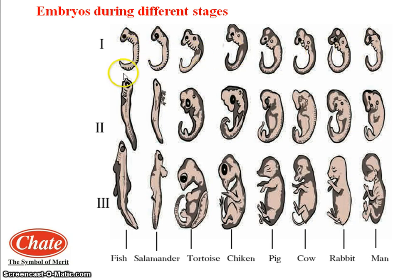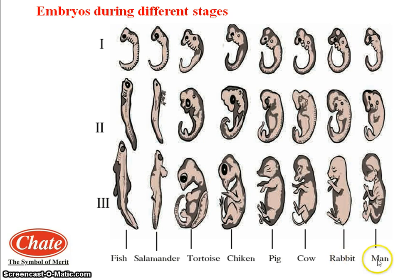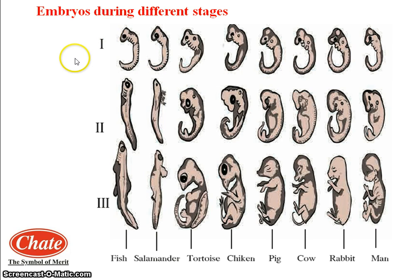Carefully observe the stages of embryonic development of some animals shown in the figure. The animals given here are fish, salamander, tortoise, chicken, pig, cow, rabbit, and man. We can see the stages of embryonic development of all these animals, and observe similarity in the initial stages. These similarities decrease gradually over time. Similarities in initial stages indicate the common origin of all these animals.